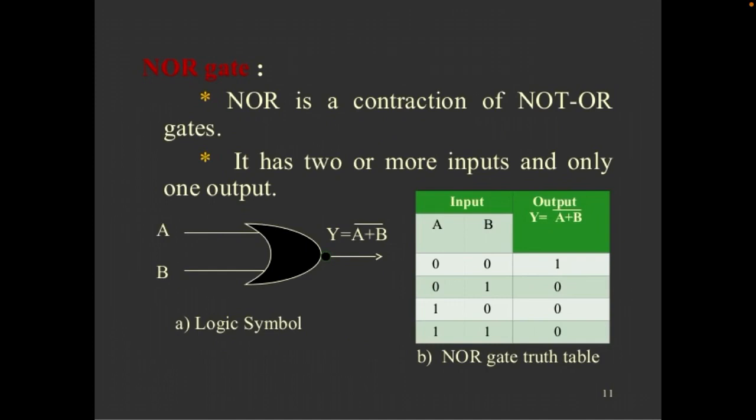NOR gate is a construction of NOT OR gate. It has two or more inputs and only one output. The truth table will be: either two inputs value is false, the output is true.